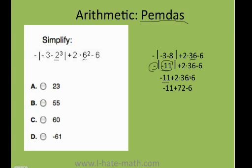Finally, 2 times 36, that gives me 72. And I just do the last step: negative 11 plus 72 is 61. Then 61 minus 6 is 55. Bingo! We found our answer.